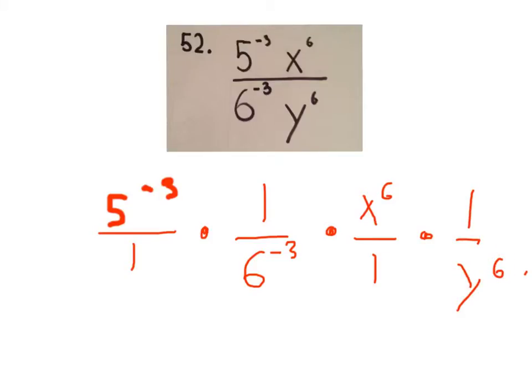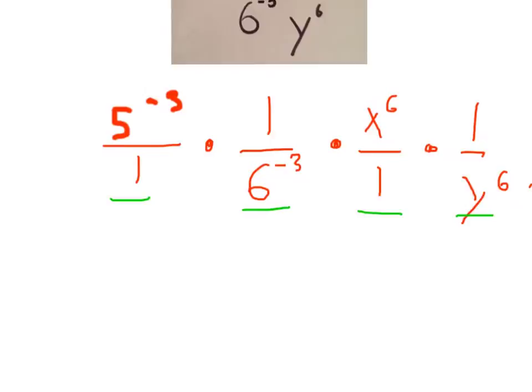Alright, so these ones over here with the variables are already fully simplified. There's nothing else we can do with those. However, these have a negative exponent, and we want to get rid of that.